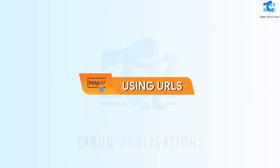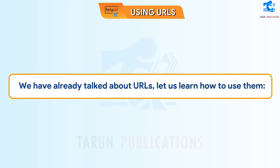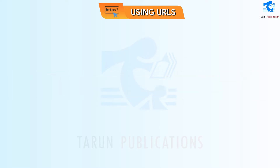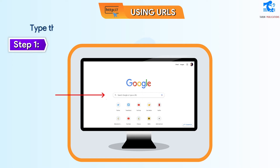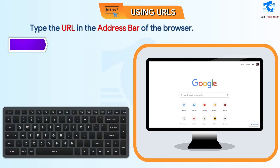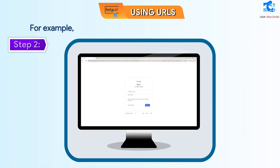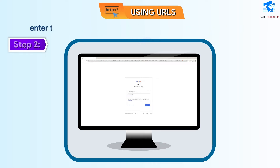Using URLs. We have already talked about URLs, let us learn how to use them. Step 1 – Type the URL in the address bar of the browser. Step 2 – Press the Enter key from the keyboard. For example, if you wish to visit the Wikipedia website, you can enter the URL www.wikipedia.org.